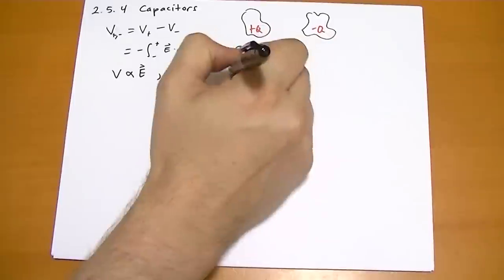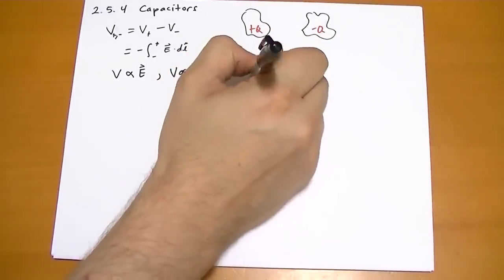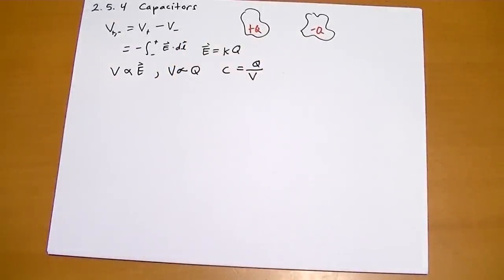So we call this ratio, we call it C, is equal to how much charge you have on the positive plate over the potential between the two plates.